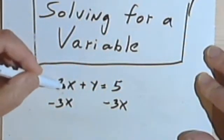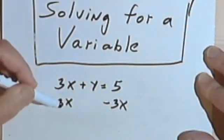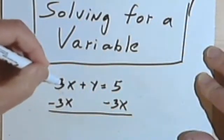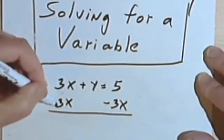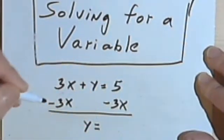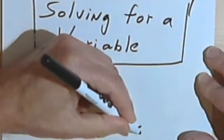This is the same thing I would have done if it just said 3 plus y equals 5, I would have subtracted 3. Now I've got 3x, I'll subtract 3x. So carrying out the subtraction, the 3x and the negative 3x cancel. I've got the y by itself. And on the right side of the equation I've got 5 minus 3x.